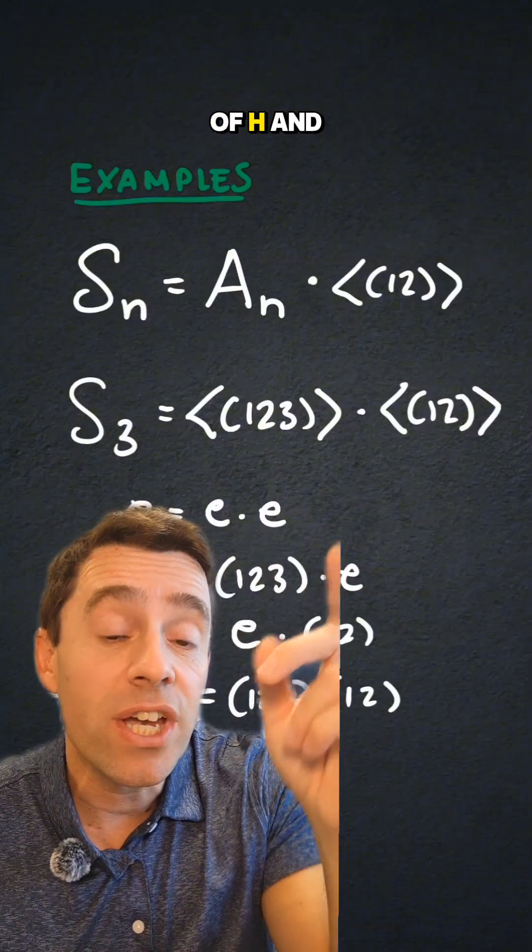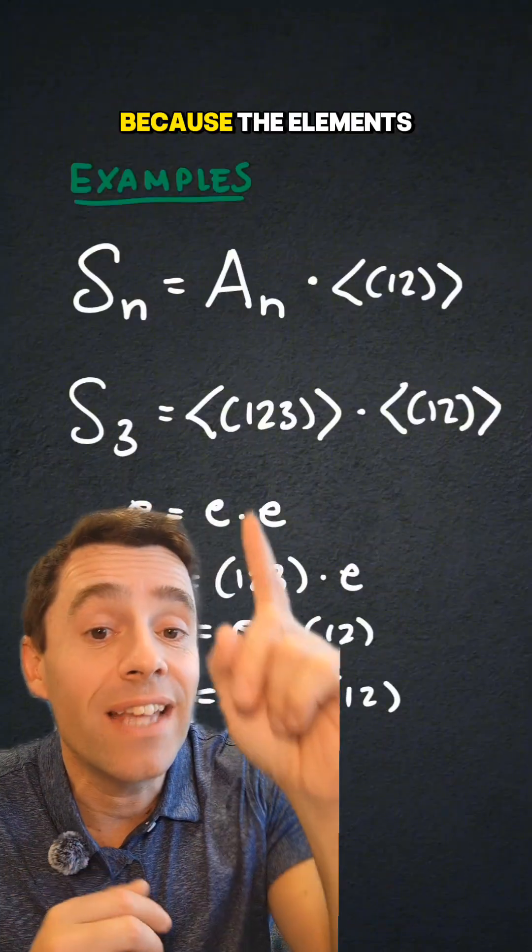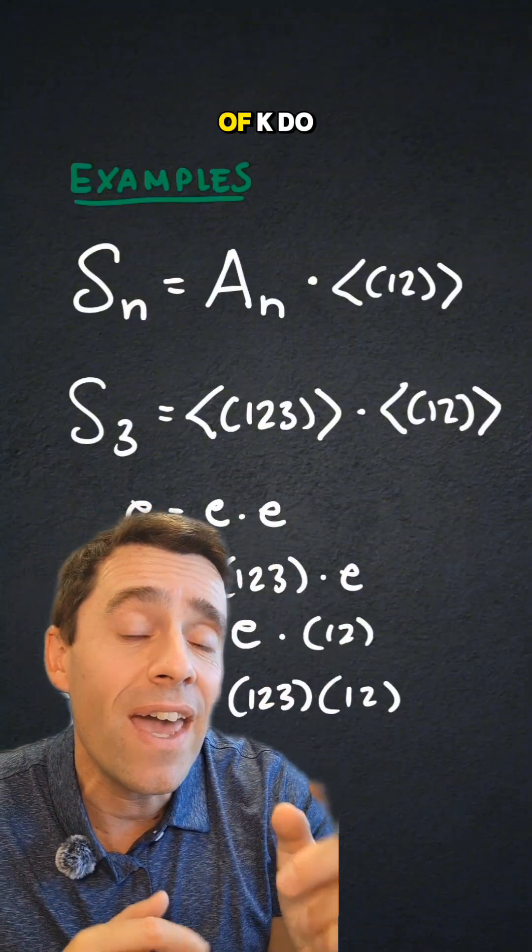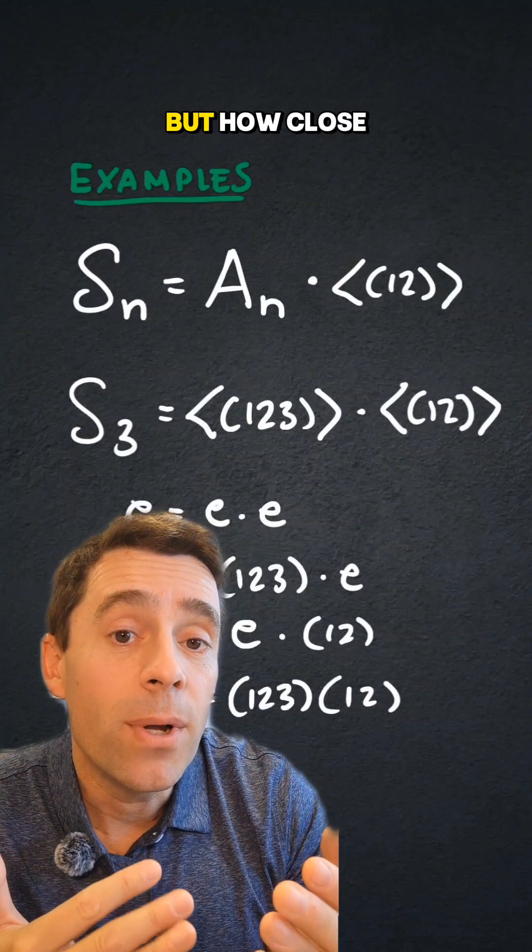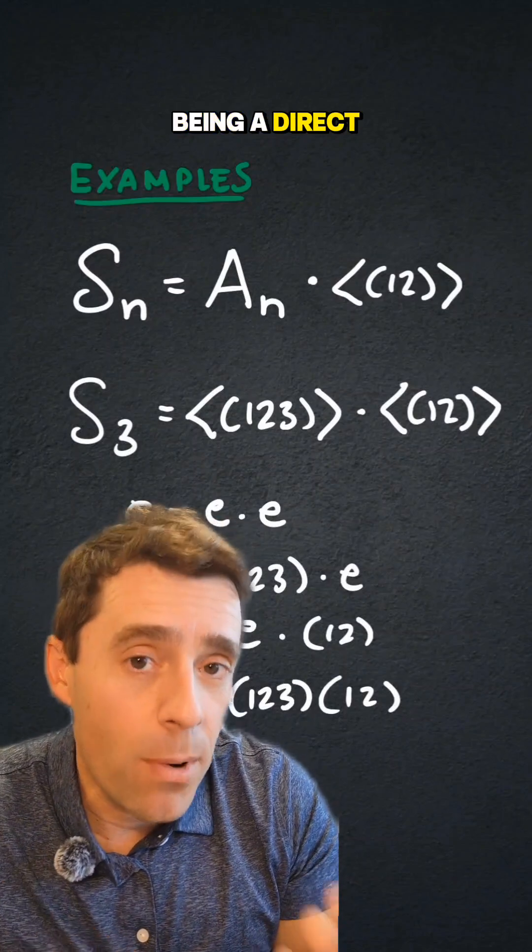Is this a direct product of h and k? Well, it is not, because the elements of an and the elements of k do not commute. But how close are we to being a direct product?